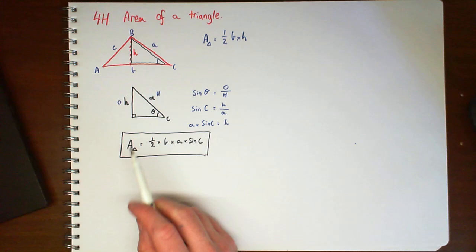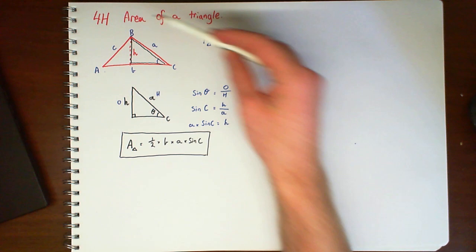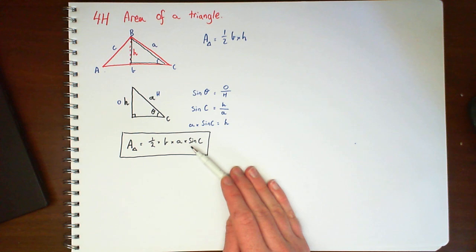Because I don't need to know, essentially I don't need to know what the height is. Because the height in here is classified by this A times sine of C.